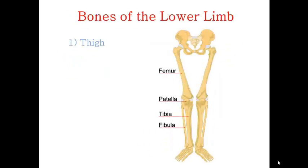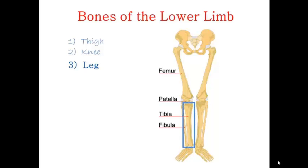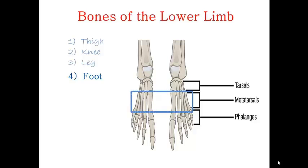Lastly are the bones of the lower limb. The lower limb is made out of four parts: the thigh, knee, leg, and foot. The thigh contains one bone known as the femur, similar to the arm in the upper limb. The knee bone is medically known as the patella. The leg is made out of two parallel bones: the tibia, which is the more medial bone, and the fibula, which is the lateral bone, just like in the forearm. The foot is very similar to the hand — it contains seven tarsals equivalent to the carpals, five metatarsals equivalent to the metacarpals, and fourteen phalanges: two for each big toe and three for each of the four lateral toes.